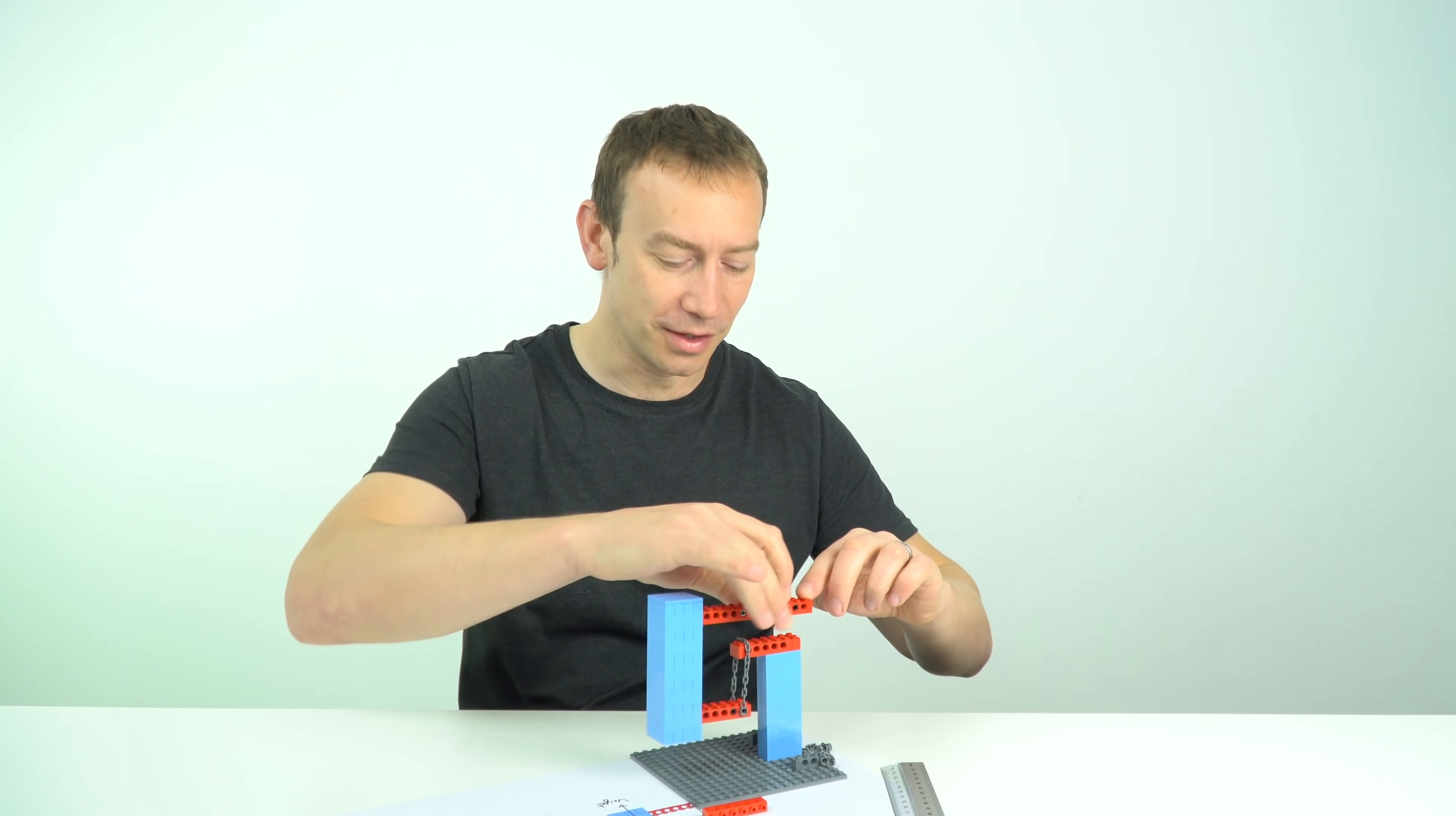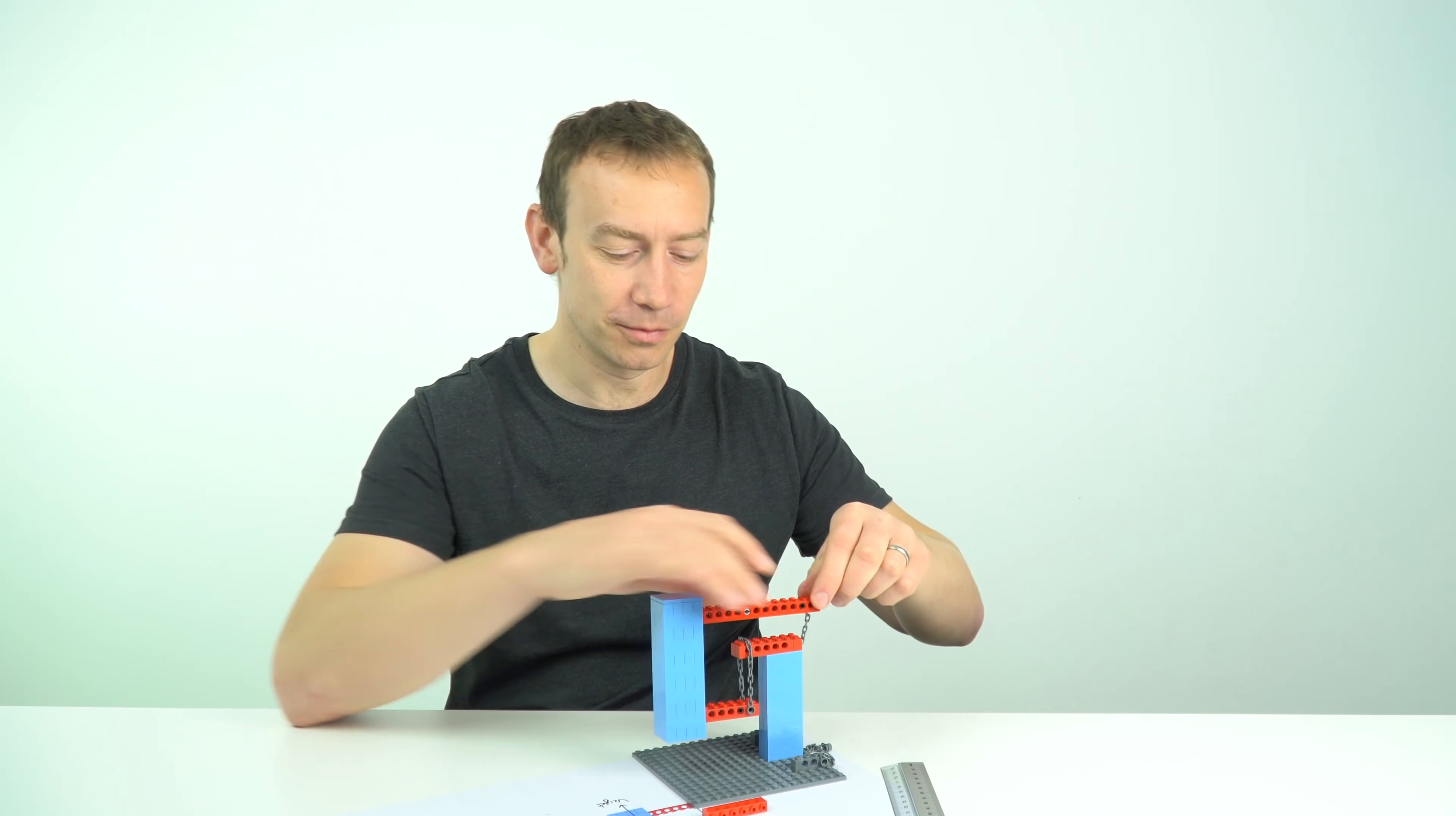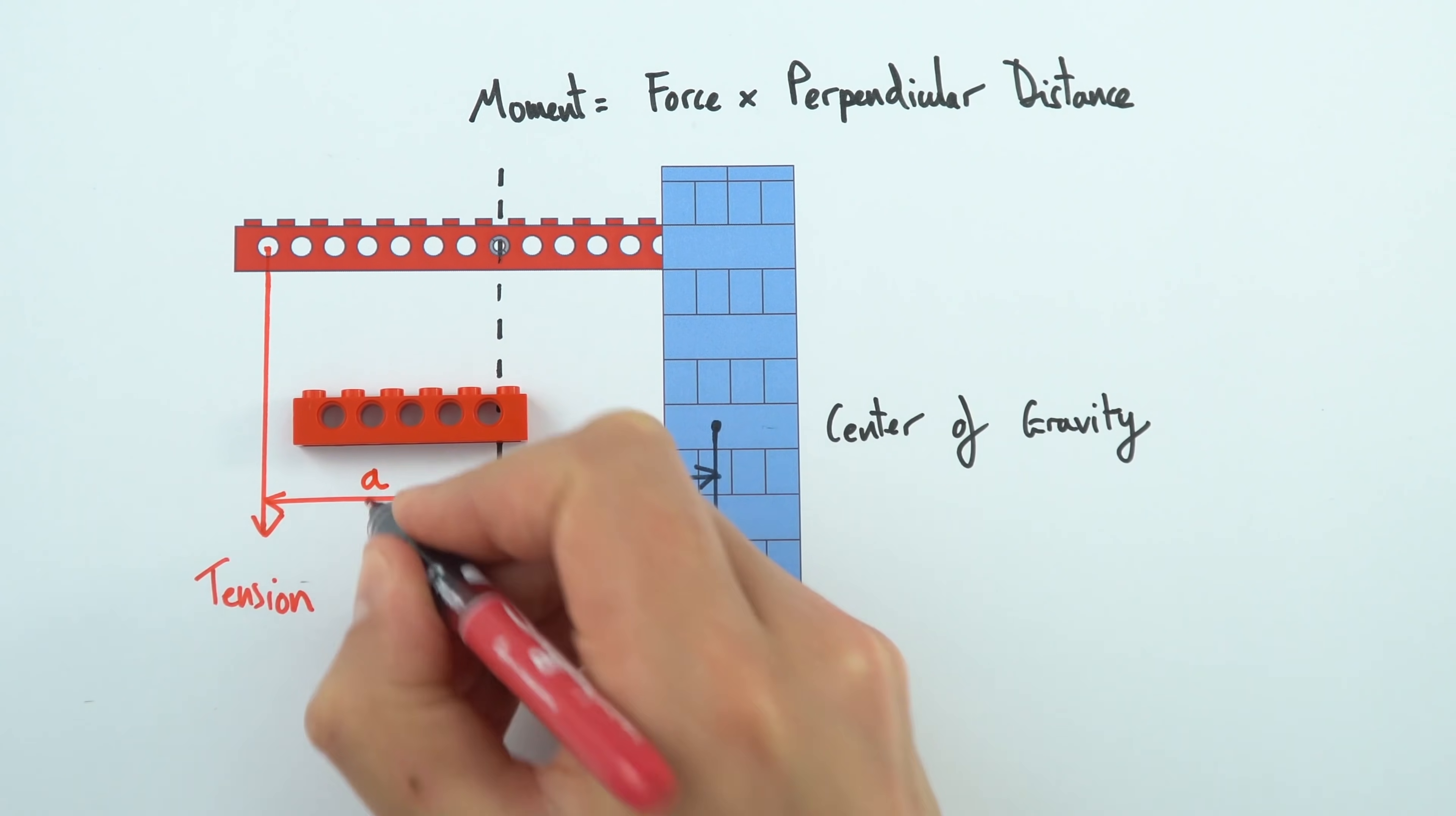Rather than actually applying a force downwards with our finger, this is where we have the string or the cables. And it's these cables here which are under tension providing that downwards force at the back of the object. So again I'll draw that onto my diagram and I'm just going to label that a distance of a away from that central pivot.